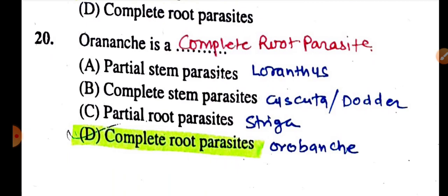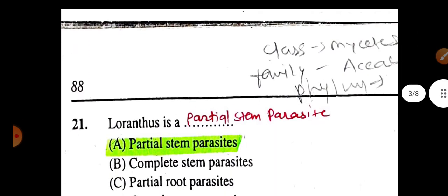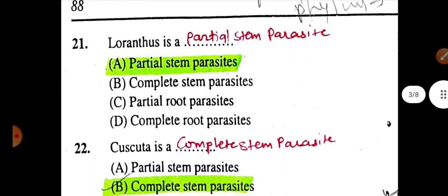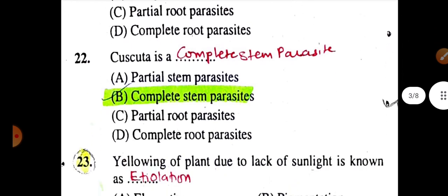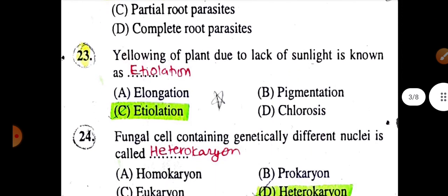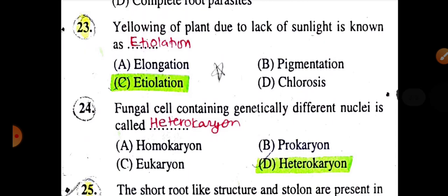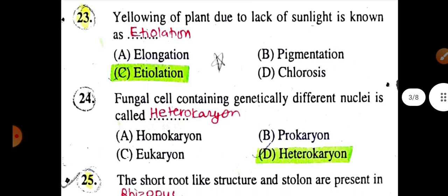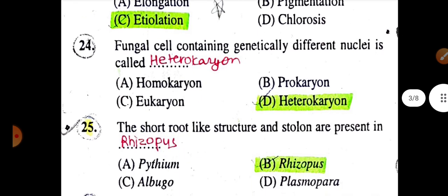Loranthus is a partial stem parasite. Cuscuta is a complete stem parasite. Partial root parasite: Striga. Complete root parasite: Orobanche. Yellowing of plants due to lack of sunlight is known as etiolation. A fungal cell containing genetically different nuclei is called a heterokaryon.